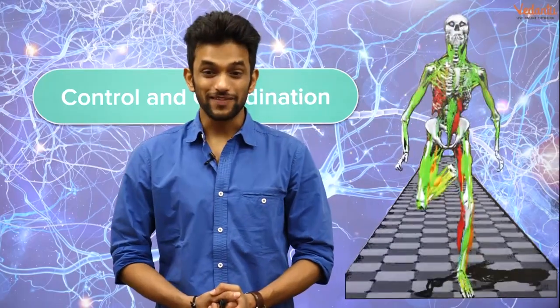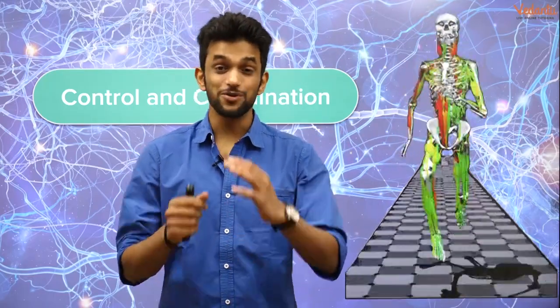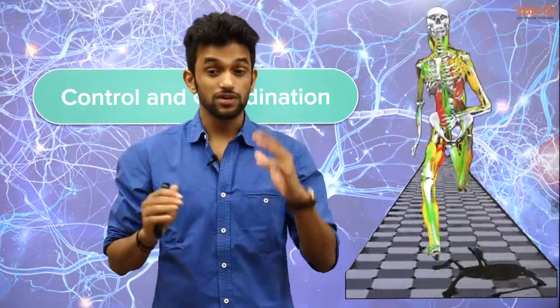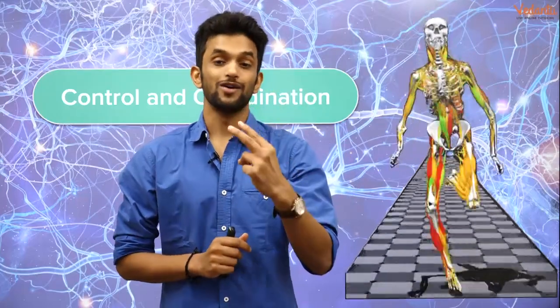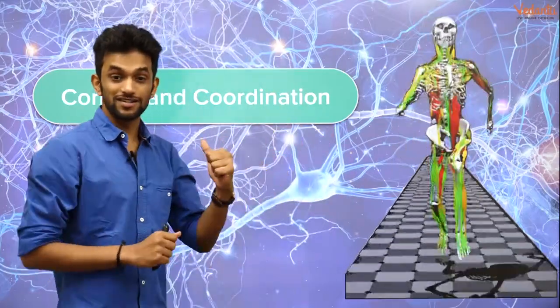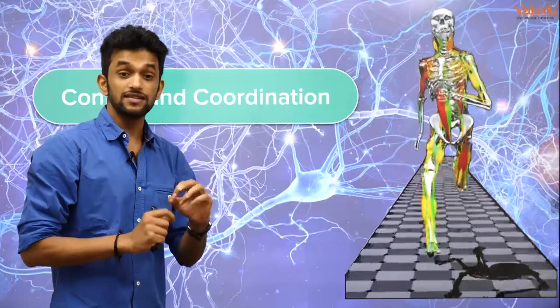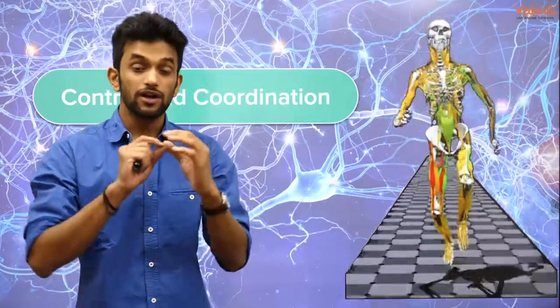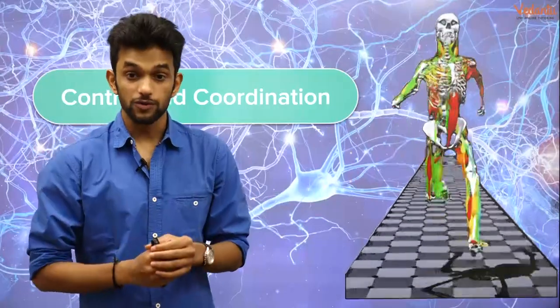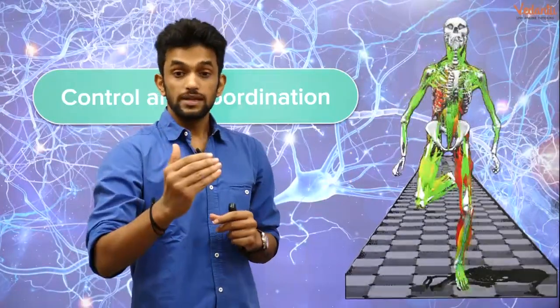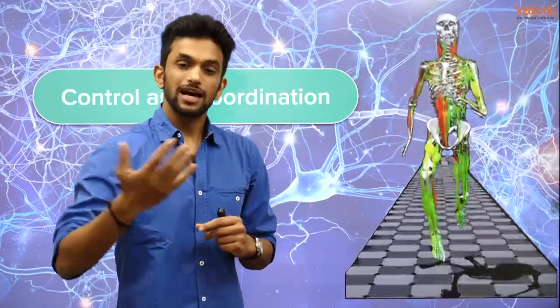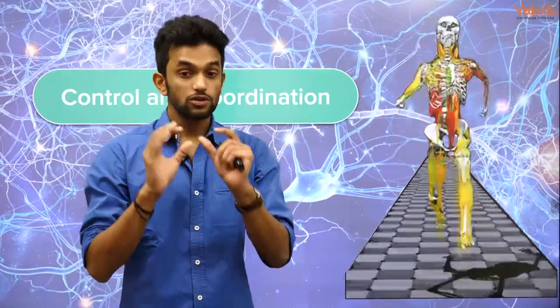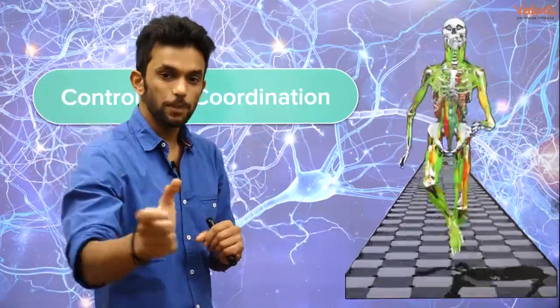Hi guys, I'm Amrit Raj and today I'm presenting the second part of the chapter Control and Coordination. We are running a wonderful series called Omang, in which we take polls from you — you guys tell us which topics are difficult in a particular chapter, and we study those topics here.